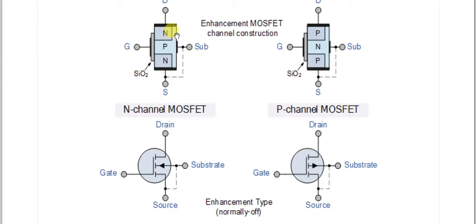For the P-channel MOSFET, the majority charge carriers flow through the P-type channel. In the N-channel case, the substrate is made of P-type material, while in the P-channel case, the substrate is made of N-type material. That is the main construction difference between these two devices.